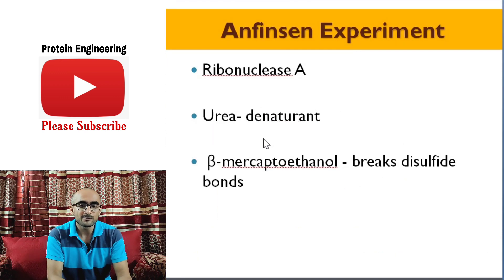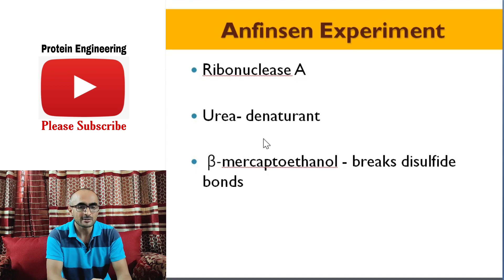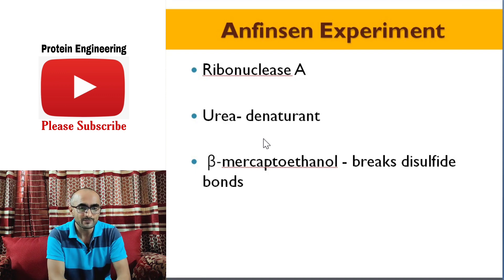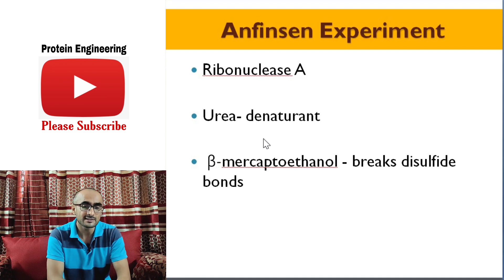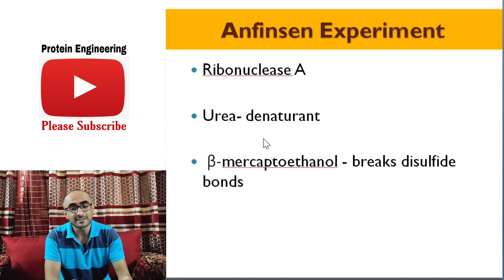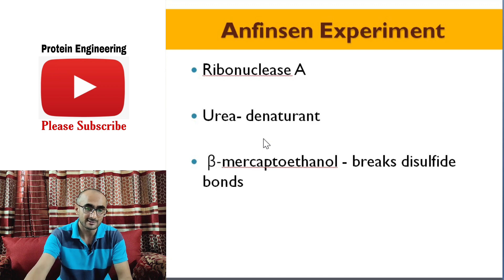In Anfinsen's experiment, he used three chemicals: one was ribonuclease A, which is an enzyme; two was urea, which is a denaturing agent of proteins; and three was beta-mercaptoethanol, a chemical which breaks disulfide bonds in proteins.